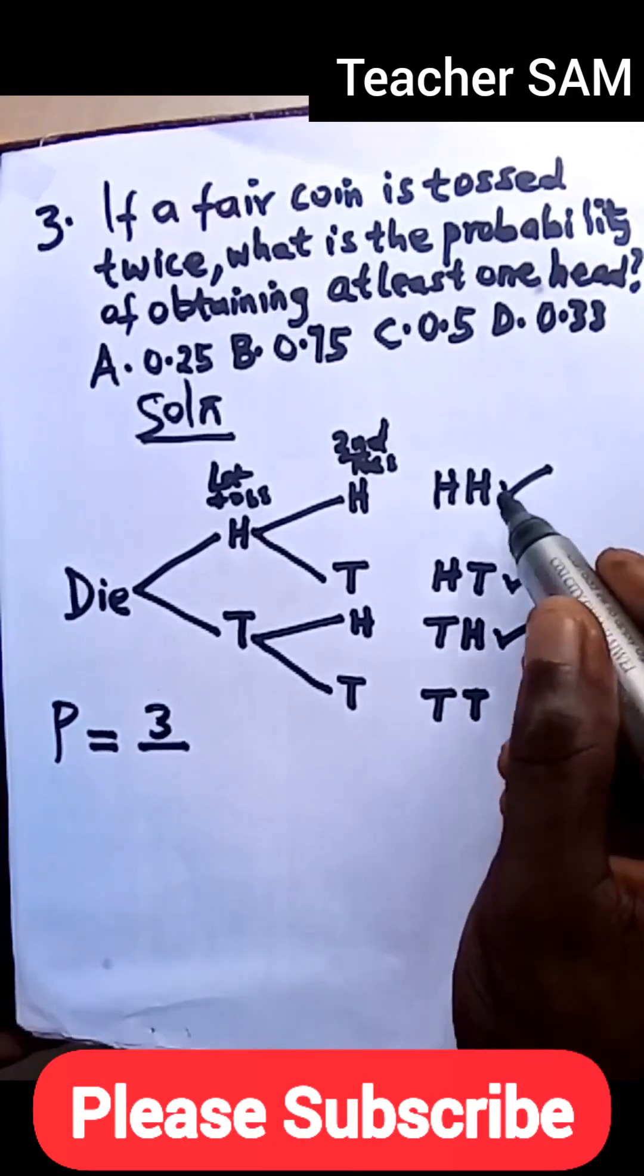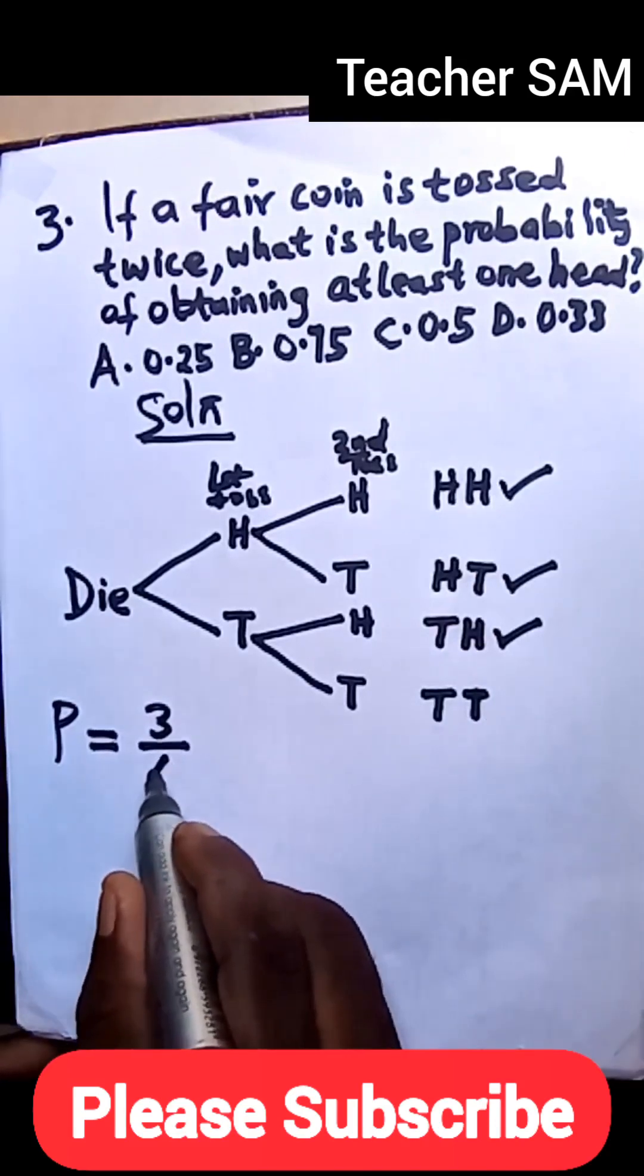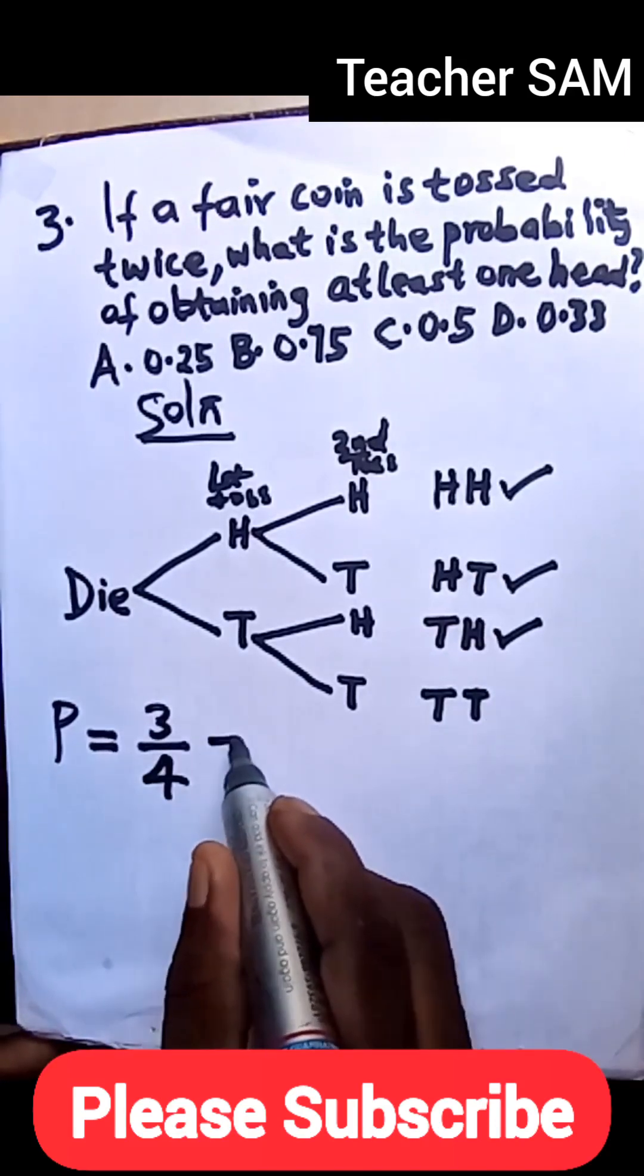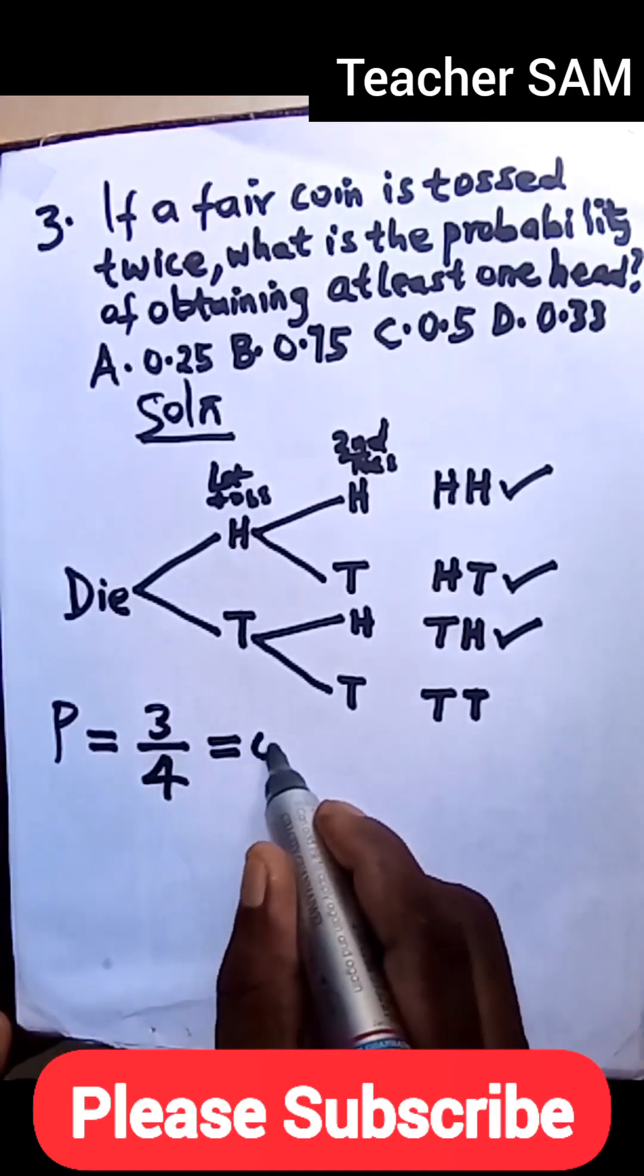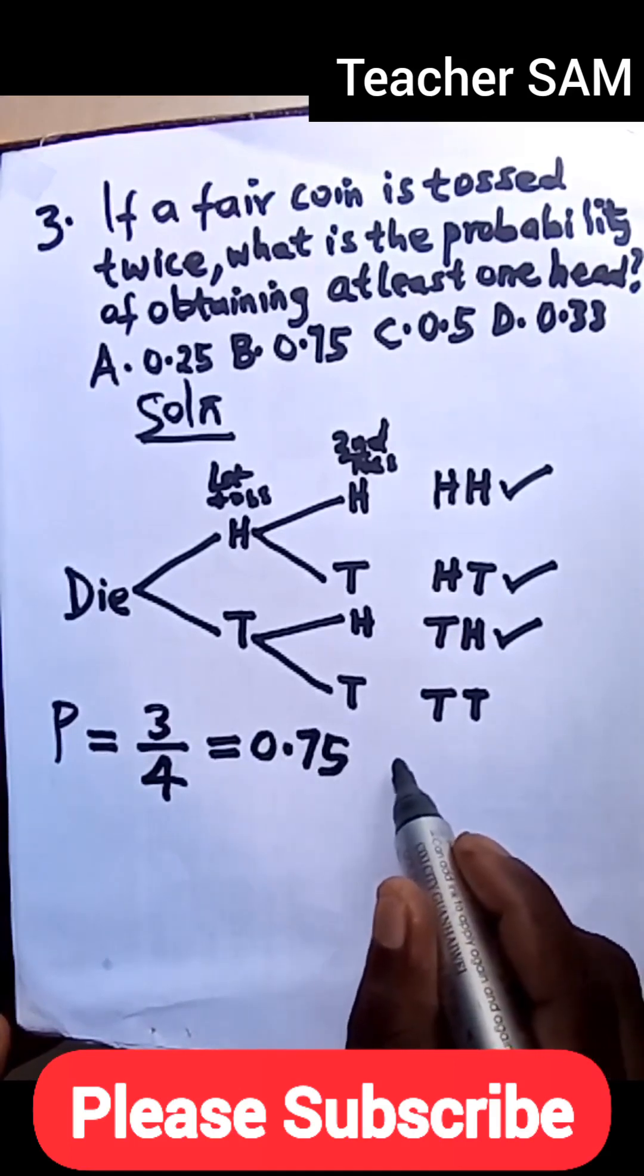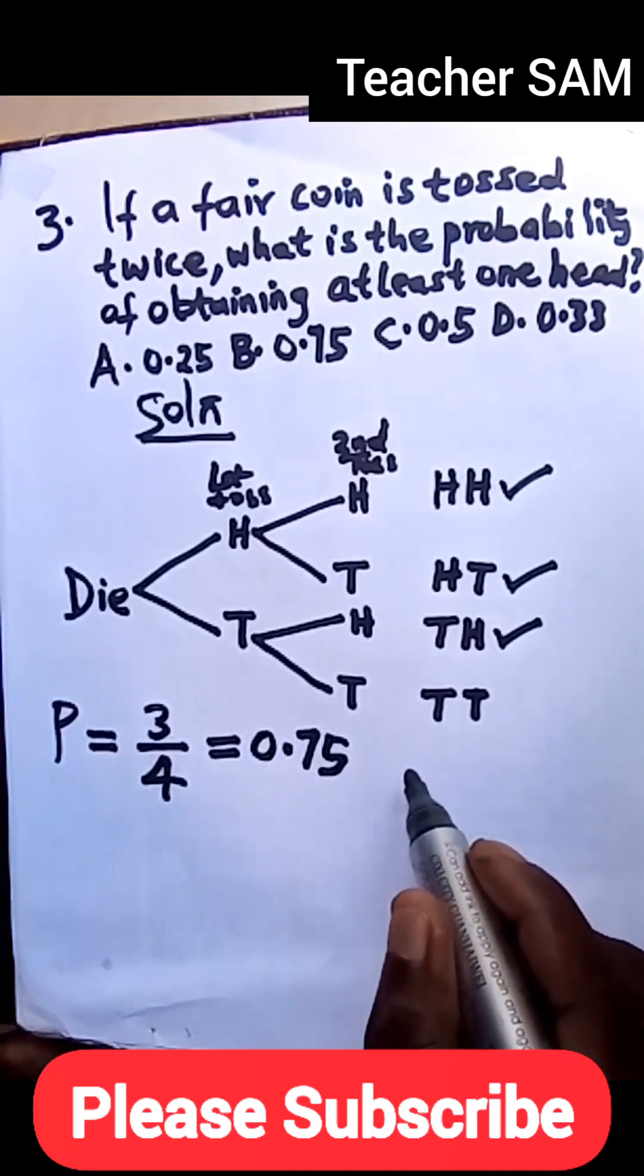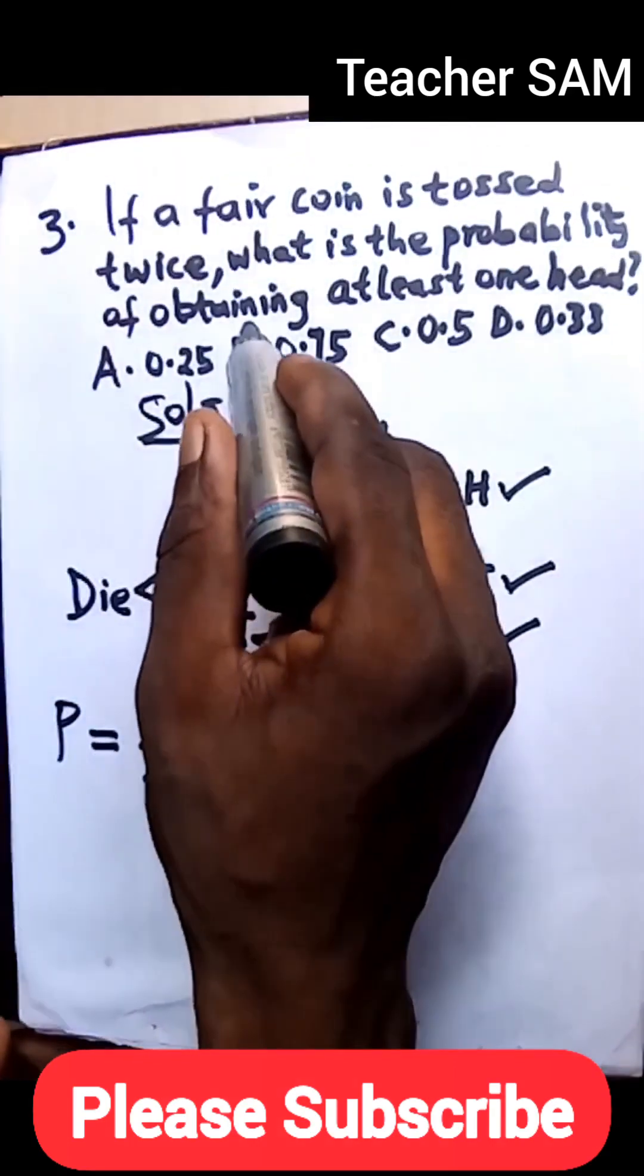All over now, the total outcome—one, two, three, four—total outcome is four. If you convert that to decimal, this three over four, convert that to decimal, just divide in your calculator, you have 0.75. So this is the answer and the correct option there is option B.